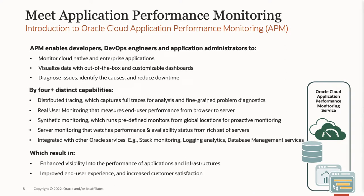APM delivers four-plus distinct capabilities: distributed tracing, which captures full traces from applications allowing you to run deep-dive analysis and diagnostics; real user monitoring, which measures end-user performance and satisfaction; synthetic monitoring, which proactively runs predefined transactions from global locations to measure the user experience of your critical application flows; and server monitoring, which collects metrics from Java-based data sources and also from Azure technologies using Prometheus scraper capability. Additionally, APM is integrated with other Oracle services such as Stack Monitoring, Logging Analytics, and Database Management services.